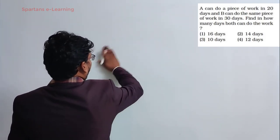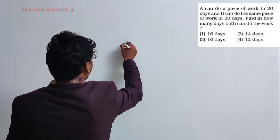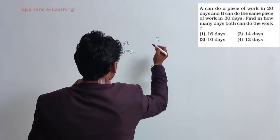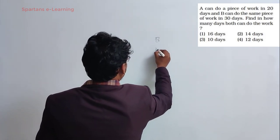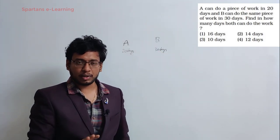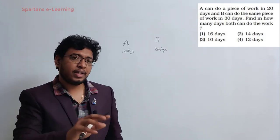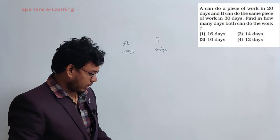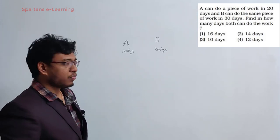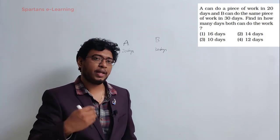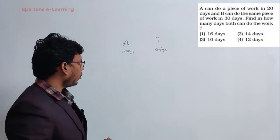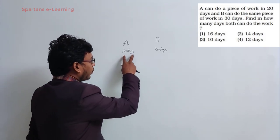Let me explain the LCM method in detail. A can do a piece of work in 20 days, B in 30 days. In the question, the total work is not given, so your work can be any number. Since work is constant for both A and B, you can assume any number of units. The assumed work should be the LCM of 20 and 30.